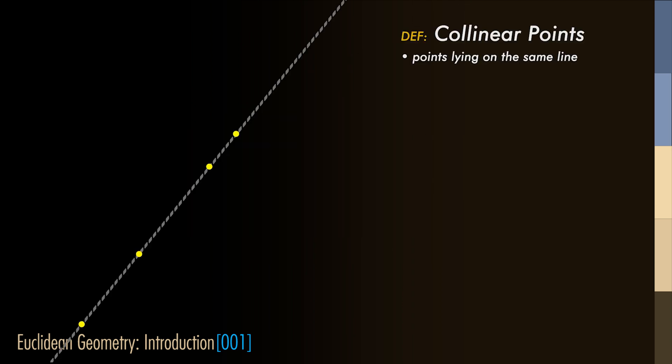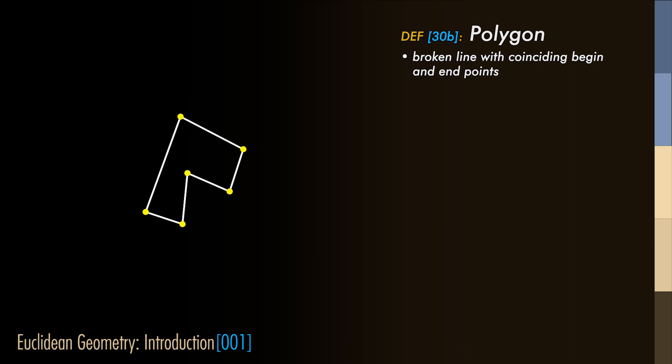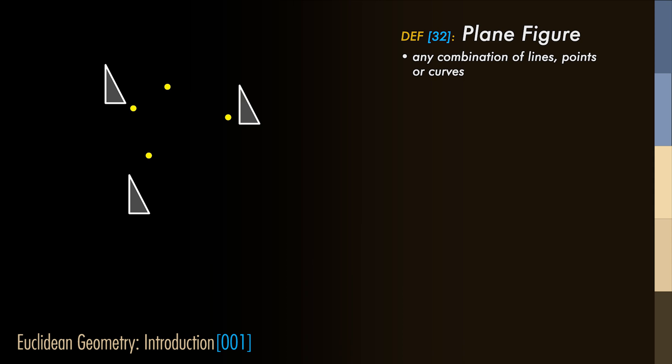Points that lie on the same line are called collinear points. A broken line is a line that is not straight, but consists of parts that are straight. A broken line of which begin point and end point coincide is called a closed line or a polygon. A curve is a line that has no part, however small, that is straight. Any combination of points, lines or curves lying in the same plane is called a plane figure. And that's what we are gonna study in this course.